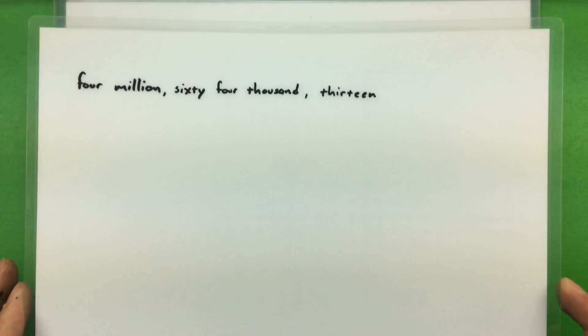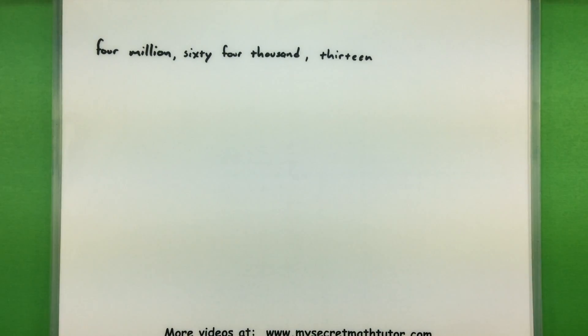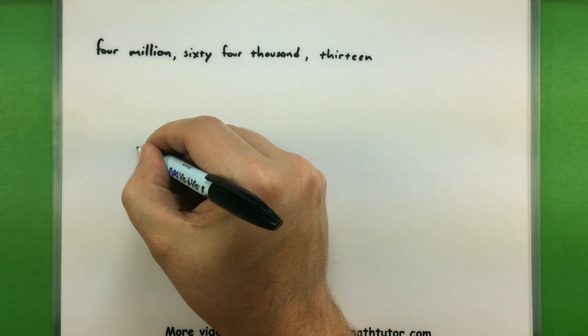Alright, let's try this one more time. Now we want to turn the number 4,064,013 into a numerical value. So once again, let's start off with the largest place value here. Looks like it's in the millions place.